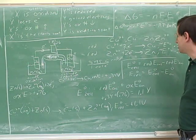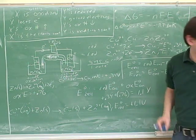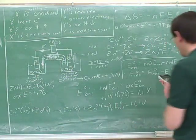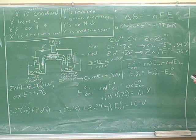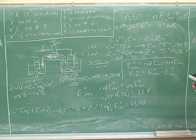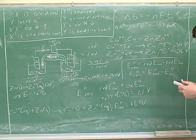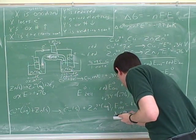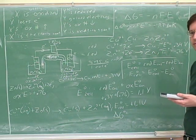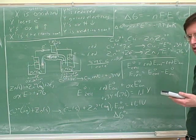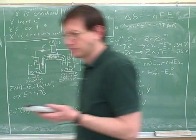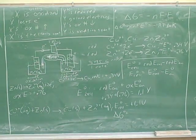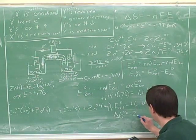Okay. All right. And then that would tell us how to find delta G in this case. We might as well, you guys have your calculator, we might as well figure out what number that is. What answer is that? Okay. So what's the answer? Negative 2.12 times 10 to the fifth.